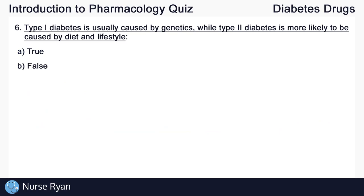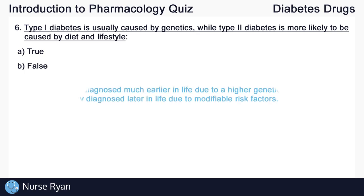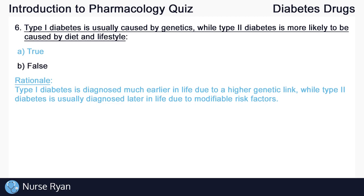Question number six: type 1 diabetes is usually caused by genetics, while type 2 diabetes is more likely to be caused by diet and lifestyle. The answer here is true. Type 1 diabetes is generally diagnosed much earlier in life due to a higher genetic link, while type 2 diabetes is usually diagnosed later in life due to modifiable risk factors.